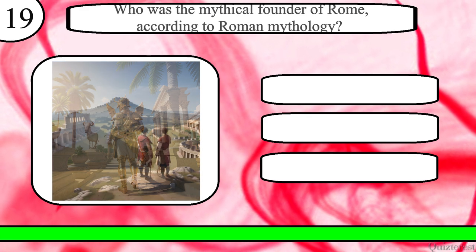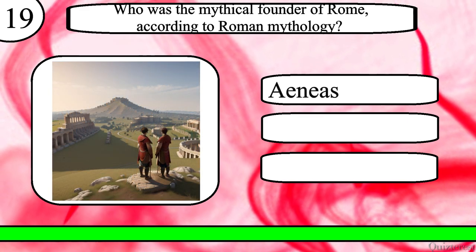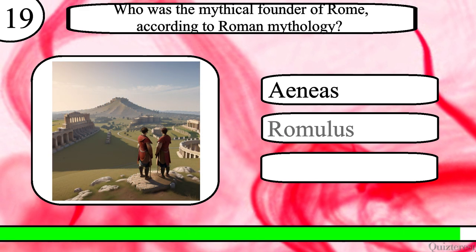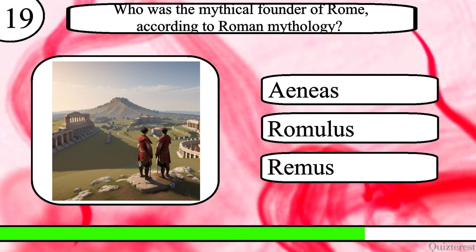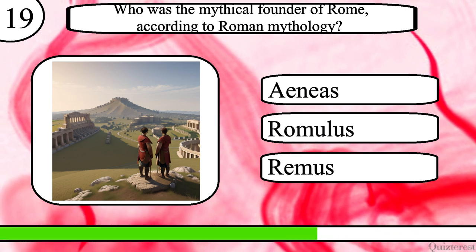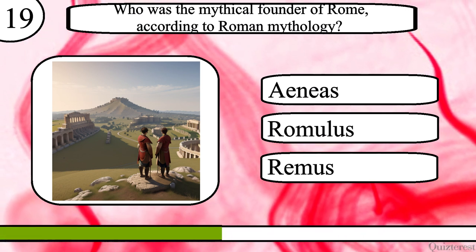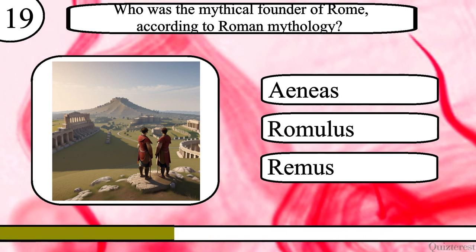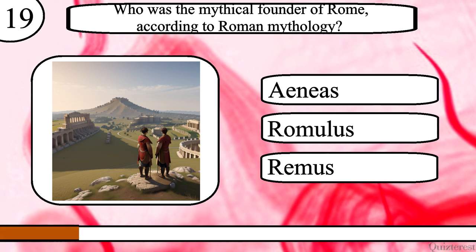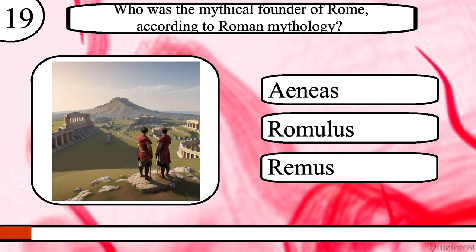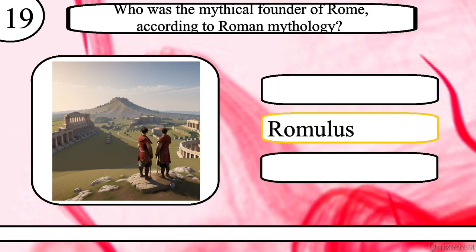Question 19. Who was the mythical founder of Rome according to Roman mythology? Aeneas, Romulus or Remus? The correct answer is Romulus.